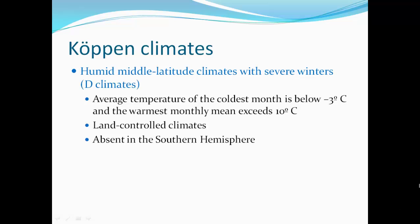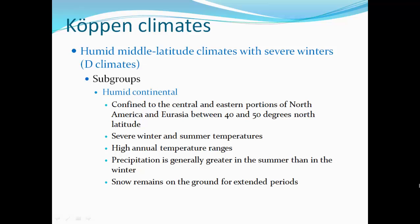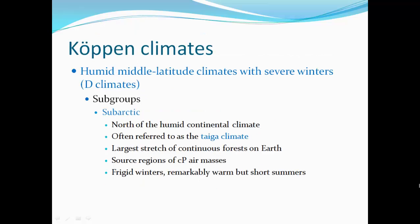Humid mid-latitude climates with severe winters — D climates, think New England. The average temperature of the coldest month is below minus 3 degrees Celsius, and the warmest month exceeds 10 degrees Celsius. These are land-controlled climates, absent from the Southern Hemisphere. The humid continental subgroup is confined to central and eastern portions of North America and Eurasia between 40 and 45 degrees north latitude, with severe winter and summer temperatures, high annual temperature ranges, and precipitation greater in summer than winter, with snow remaining on the ground for extended periods. The subarctic is north of the humid continental, referred to as the boreal climate — the largest stretch of continuous forest on Earth, source regions of continental polar air masses, with frigid winters and remarkably warm but short summers. Think Alaska.